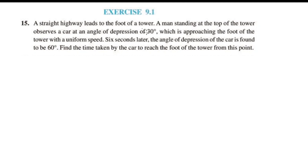A straight highway leads to the foot of a tower. A man standing at the top of the tower observes a car at an angle of depression of 30 degrees, which is approaching the foot of the tower with a uniform speed. Six seconds later, the angle of depression of the car is found to be 60 degrees. Find the time taken by the car to reach the foot of the tower from this point. This is tower AB.